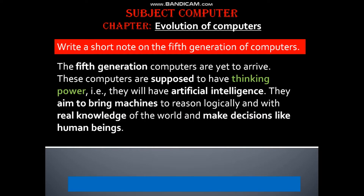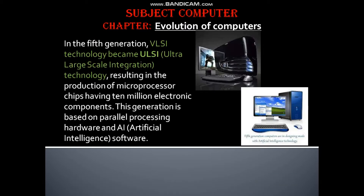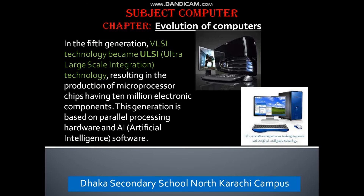The fifth generation computers are yet to arrive. These computers are supposed to have thinking power and will have artificial intelligence — the aim being to make machines reason logically with real knowledge of the world and make decisions like human beings. In the fifth generation, VLSI technology becomes ULSI (Ultra Large Scale Integration), resulting in the production of microprocessor chips having 10 million electronic components. The generation is based on parallel processing hardware and AI artificial intelligence software.